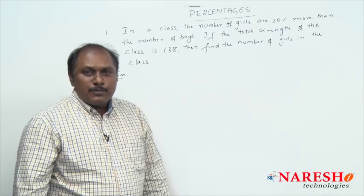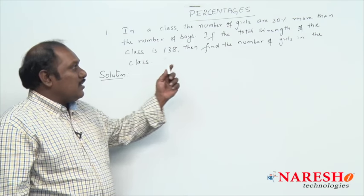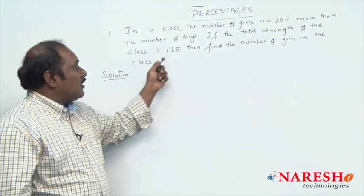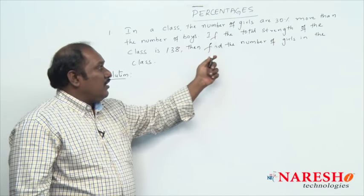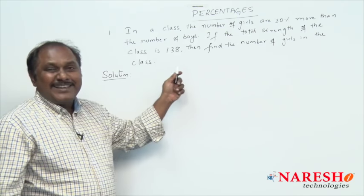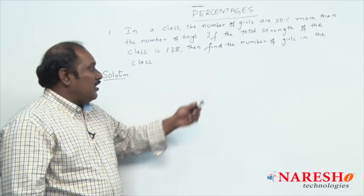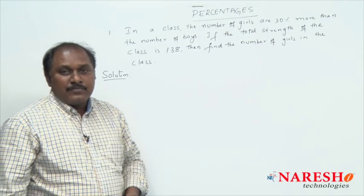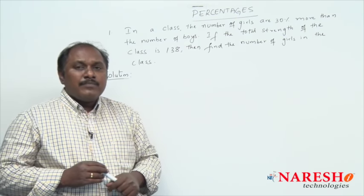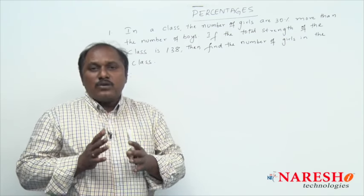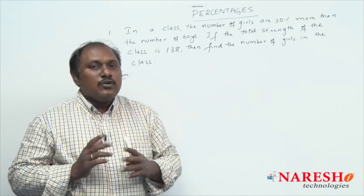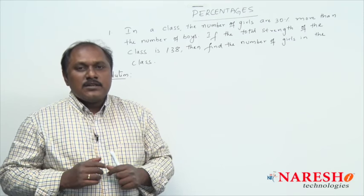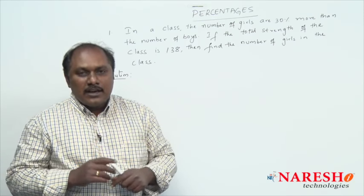First problem: in a class the number of girls are 30 percent more than the number of boys. If the total strength of the class is 138, then find the number of girls in the class. Let us see how to answer this question in two different ways — one way using variables, the second way using a logical idea.